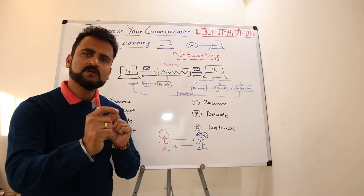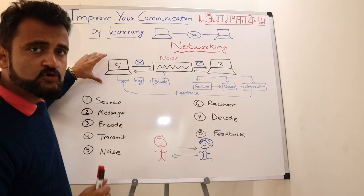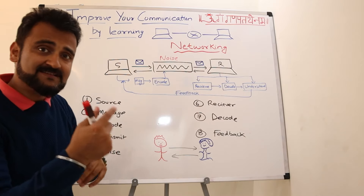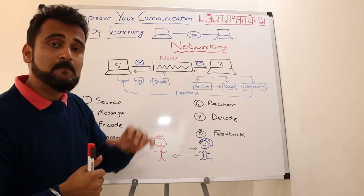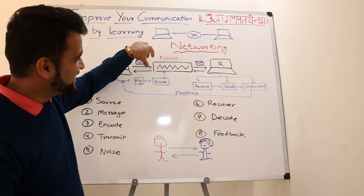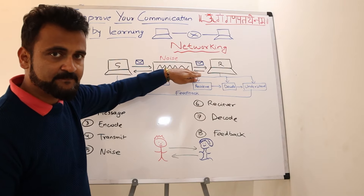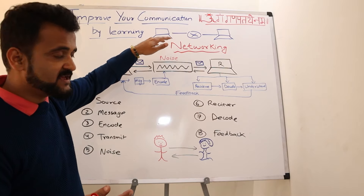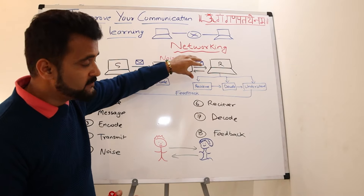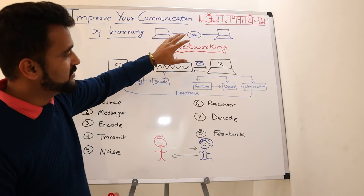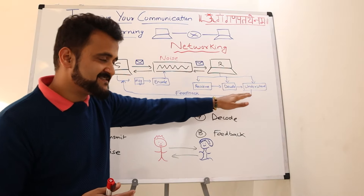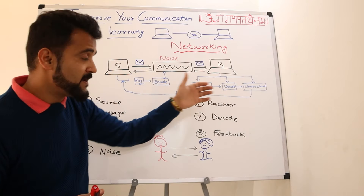Let's start by understanding a normal computer networking workflow. First you have the sender — the source computer from which the message originates. That message gets encoded in a manner where it can only be comprehended by the receiver, which could be for security aspects. Then that message is sent onto the channel, the communication channel through which it gets transmitted. There could be noise and distortions adding friction. Eventually the message reaches the receiver, gets decoded, the receiver understands it, and sends feedback back to the sender.